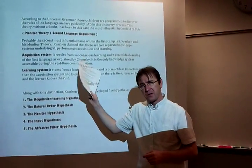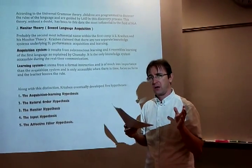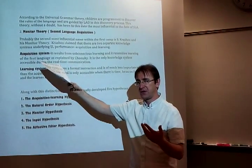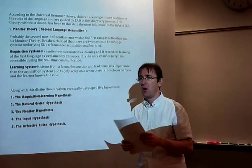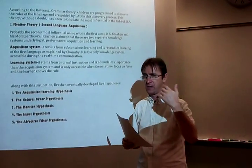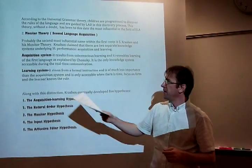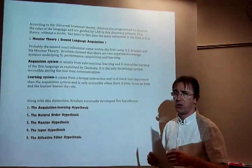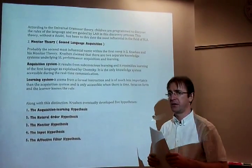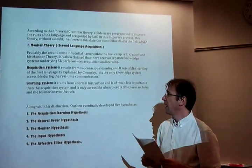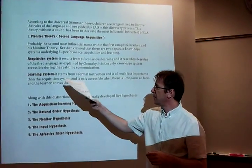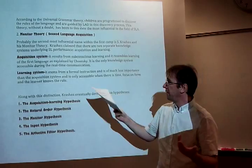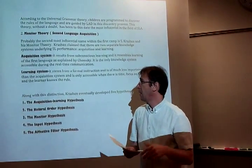Krashen said that there are two separate, independent systems of learning language. One is the acquired system, or acquisition system, which is a subconscious system — we do not consciously learn the rules, we just acquire them as we go. Then there is the learning system, which is the conscious system we learn through classroom activities, books, and so forth. The learning system is the one that monitors the acquisition system in real-life communication.